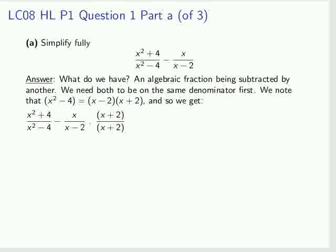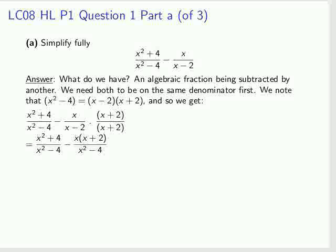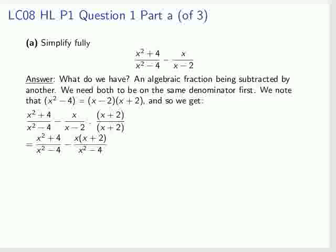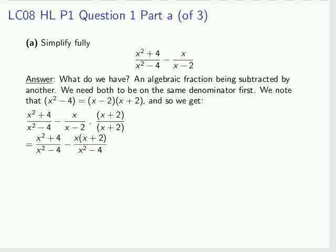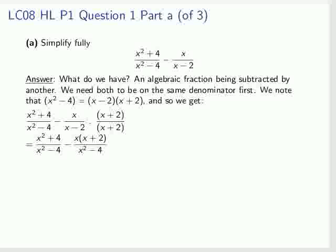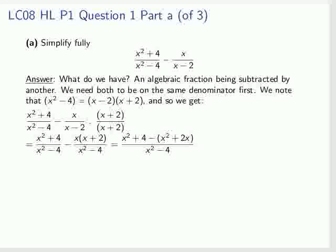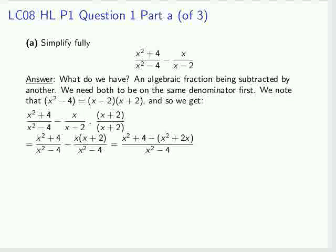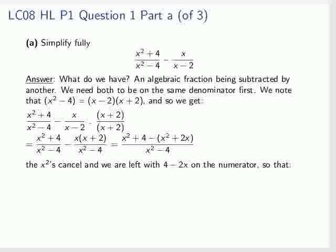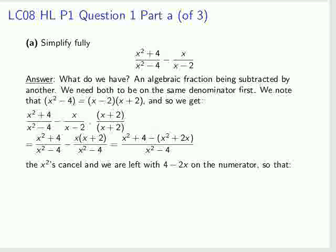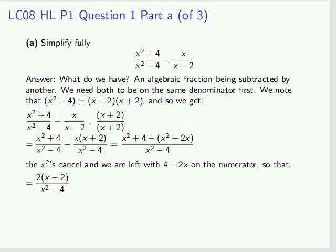So what we'll do is multiply above and below the second fraction only by x plus 2, and we finally manage to get the two denominators to be the same. We can concentrate on the numerator and subtract the modified numerator of the second fraction from the numerator on the first fraction. And that's a question of seeing what might cancel. We see x squares cancel.